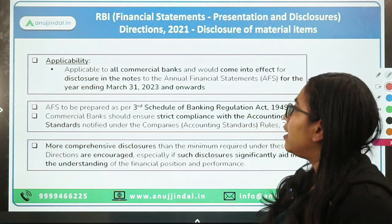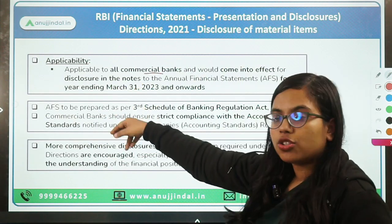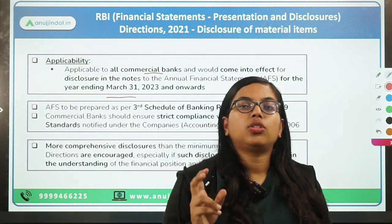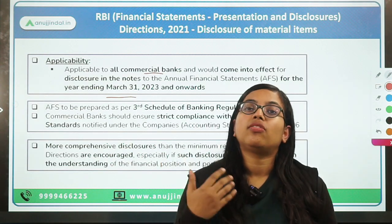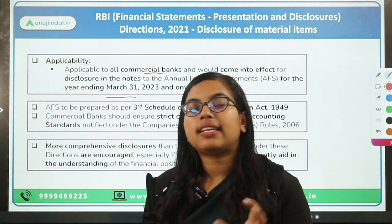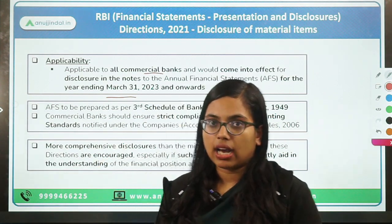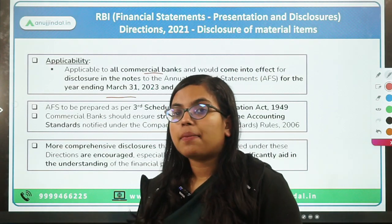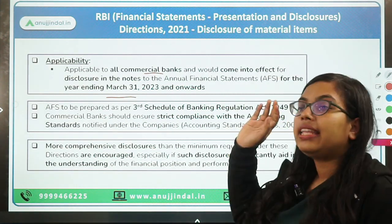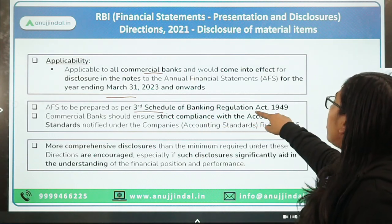The last news is regarding certain instructions that RBI has given to commercial banks, which they need to follow while preparing their annual financial statements. If we talk about applicability, this direction will apply to all commercial banks and will come into effect for the disclosure in the notes for the year ending 31st March 2023. So from next year 31st March 2023 onwards, all annual financial statements prepared by commercial banks need to follow this disclosure norm.